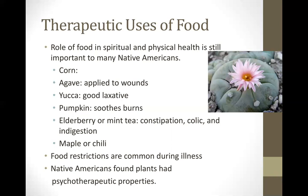Agave was used for wounds and still is today. Pumpkin was used to soothe burns, and yucca was used as a laxative. There were food restrictions common during illness — cabbage, eggs, fish, meat, milk, onions, and organ meats were to be avoided. During pregnancy, sweets were avoided because eating sweets while pregnant was believed to make the child weak. Native Americans also used many psychotherapeutic plants, such as the peyote cactus, used in trances, hypnotic states, and religious ceremonies.